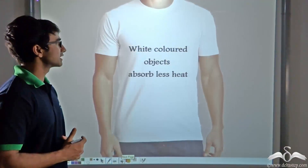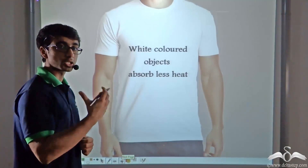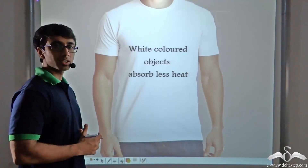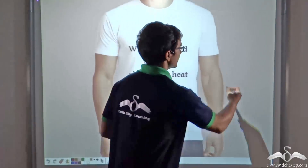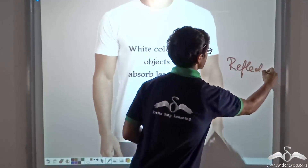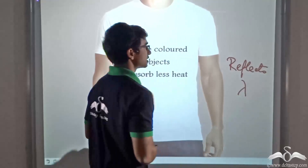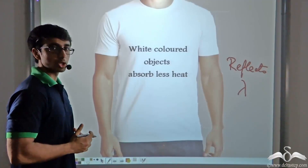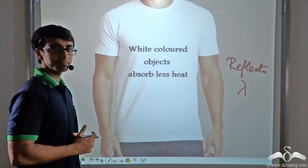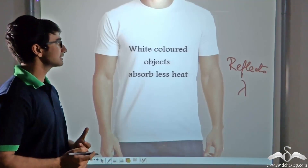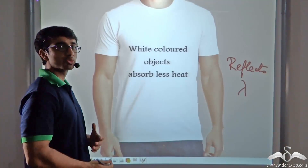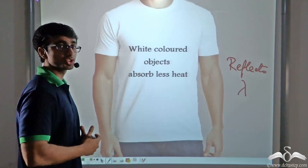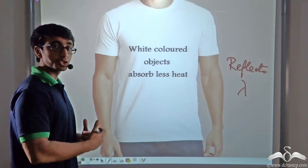Similarly, she always encourages you to wear white coloured clothes. We have learnt that a white coloured object appears white because it reflects all the wavelengths that visible light contains, so none of it is absorbed. If none of it is absorbed, no amount of it is converted into heat energy. As a result, white coloured objects absorb very little or almost no heat, and this is the reason why your mother will always encourage you to wear white coloured clothes during summer — because they make you feel more comfortable.